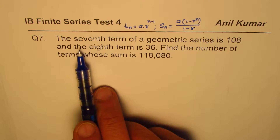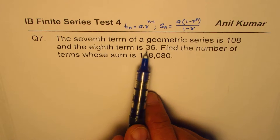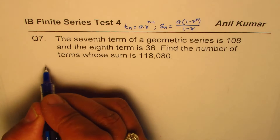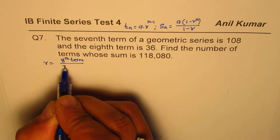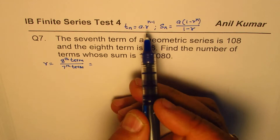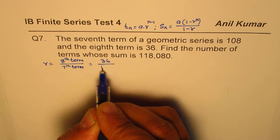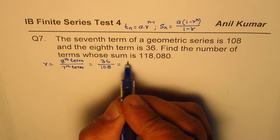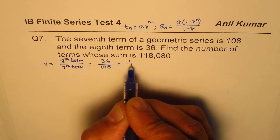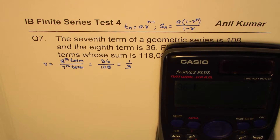Let's go through this question. The seventh term is 108 and the eighth term is 36. Clearly, the ratio r equals the eighth term divided by the seventh term. So r equals 36 divided by 108. Simplifying — since 36 times 3 is 108 — we get r equals 1 over 3.